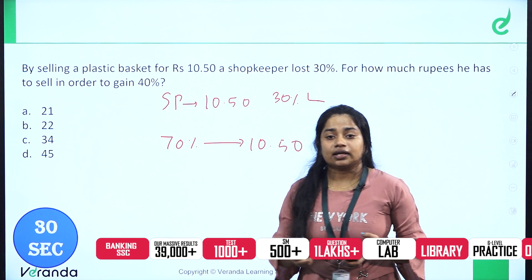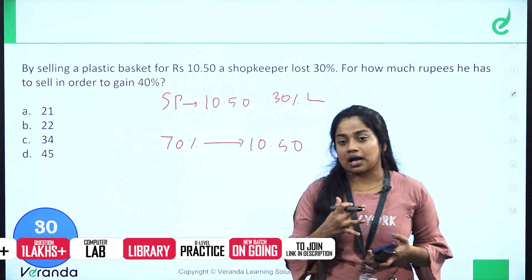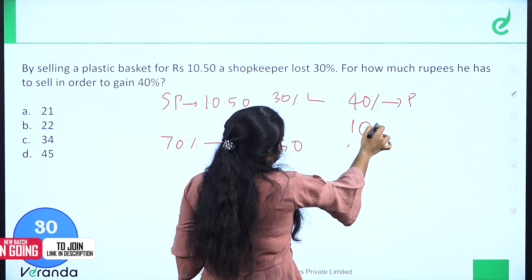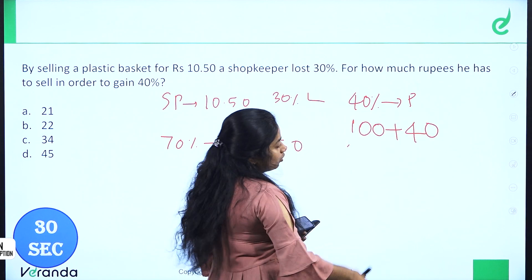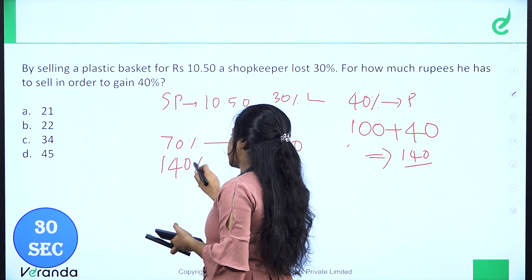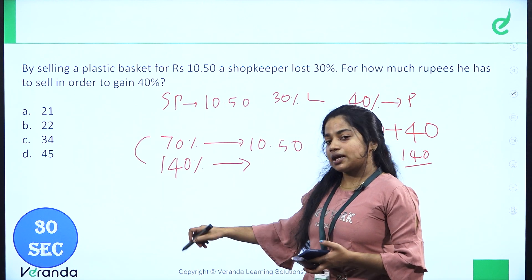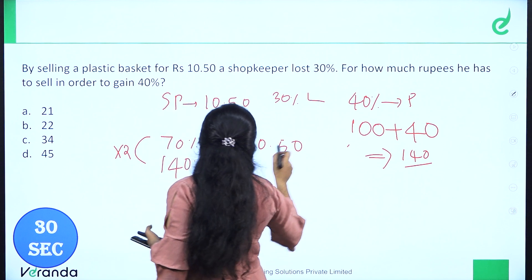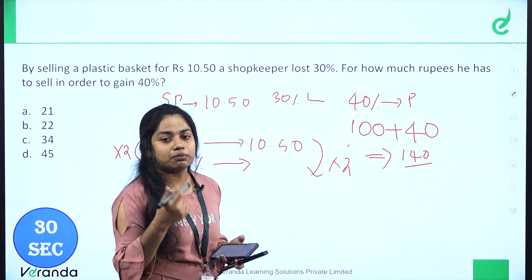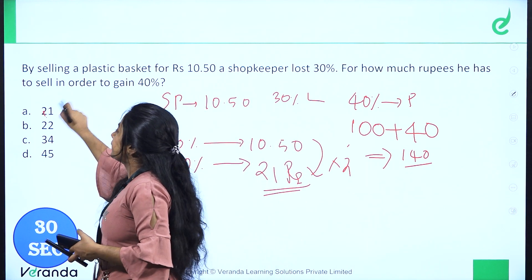For how much should he sell to get a profit of 40 paise? The cost price is 10 rupees 80 paise. Adding a profit of 40 paise gives a selling price of 10 rupees 80 paise plus 40 paise. Multiplying the cost price gives us 20 rupees. Option A is the correct answer.